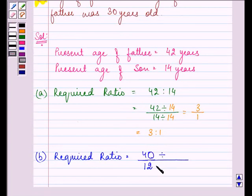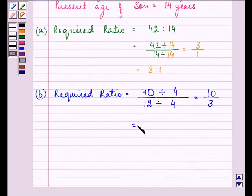So let us divide these two by their HCF. And here, in this case, the HCF is 4. So the answer comes out to be 10 upon 3, that is 10 to 3.